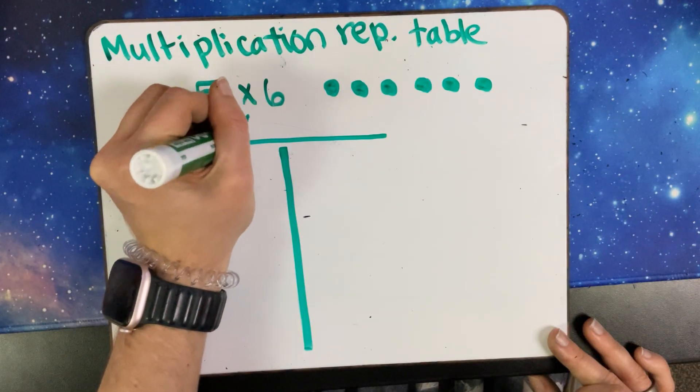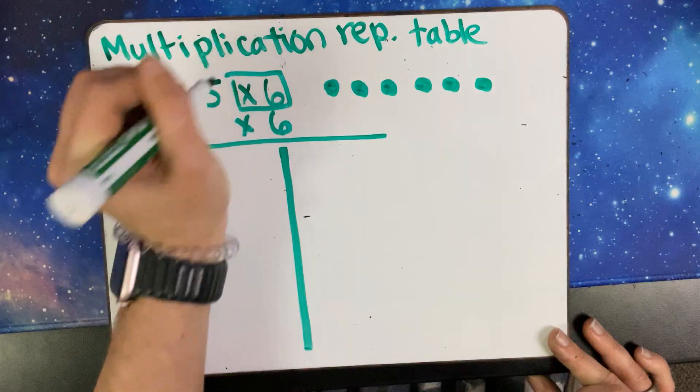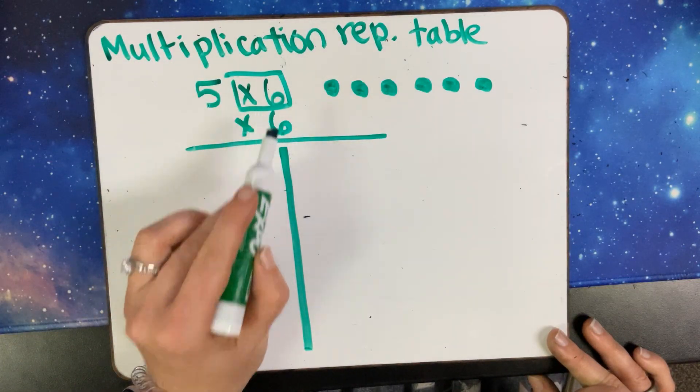I'm going to create a table. On the top of the table, I normally put times six, since that is our group size, and you can see that based on where the numbers are in relation.